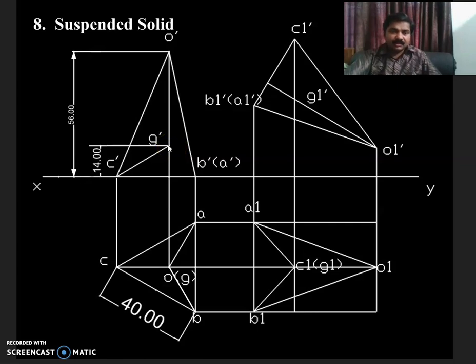In the case of prisms, it will be at h by 2. Then in the next step, there is no change in the shape and size of the figure. Only thing is that point of suspension will be at the top. So we are going to suspend from the corner C. So C1 dash will be at the top.